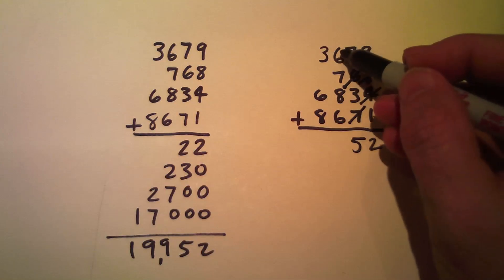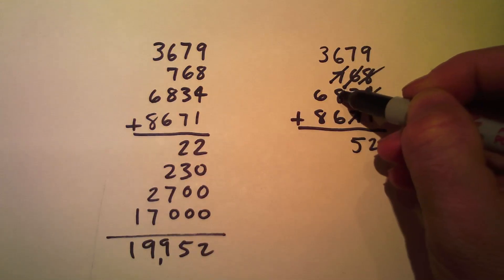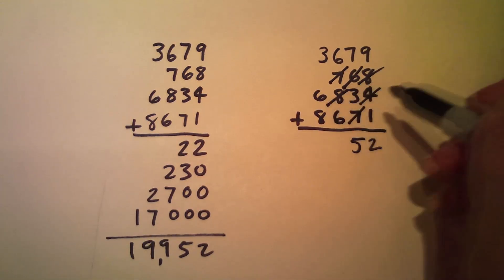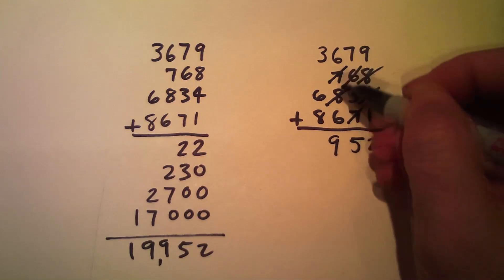2 and 6 is 8, 8 and 7 is 15, 5 and 8 is 13, 3 and 6 is 9. I carry a 1, 2, I count the scratches, 1, 2 into the next column.